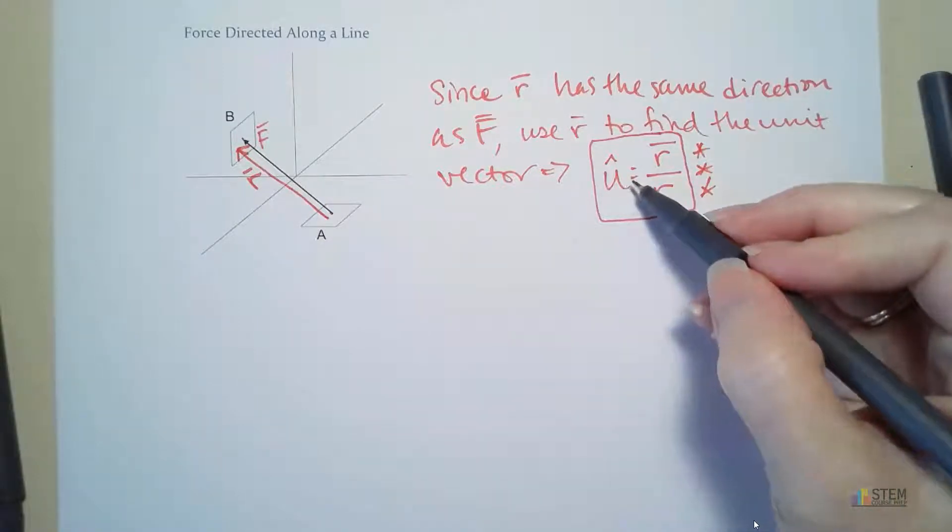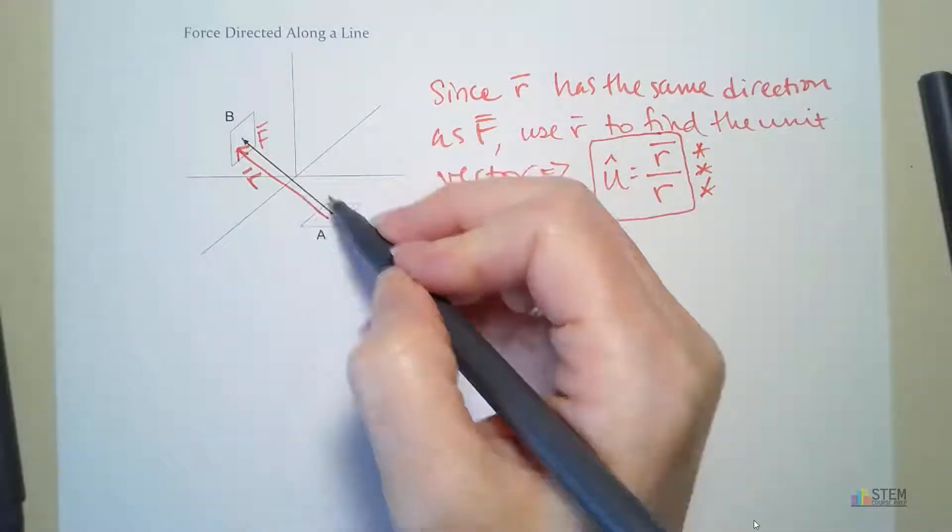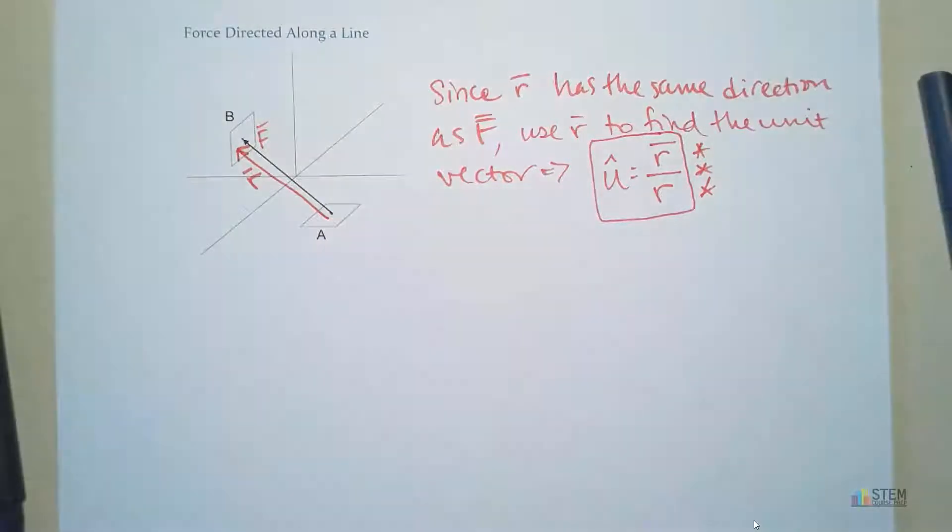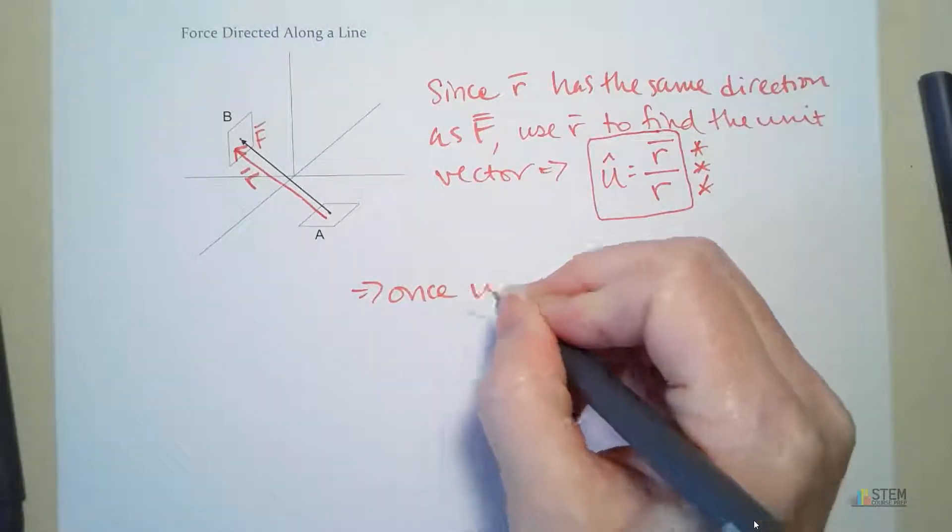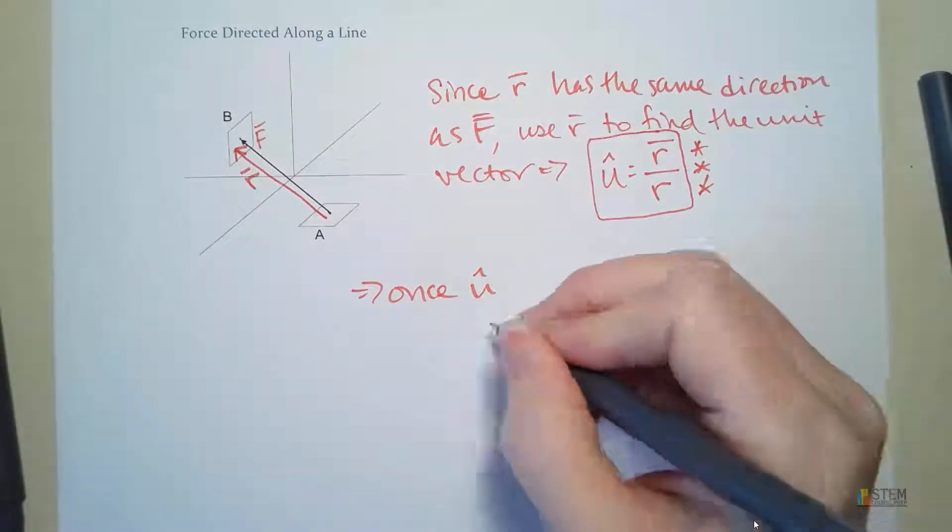Now, once we have this unit vector, since R and F are in the same direction, because essentially we drew those two parallel, well, then that means that once that unit vector U is known,